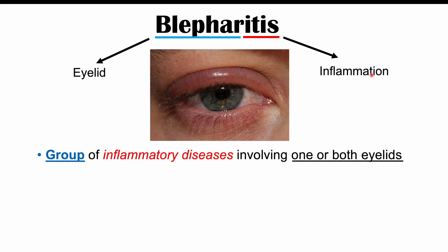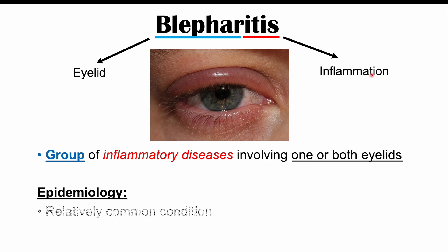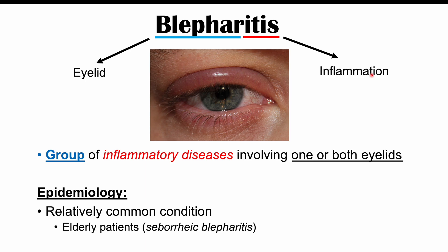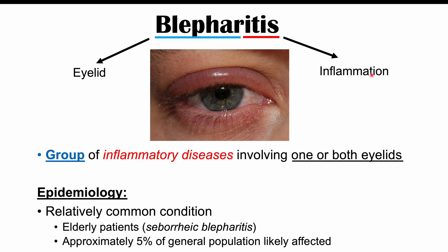We're going to talk about different types and causes of blepharitis in the upcoming slides. Blepharitis can be a relatively common condition, seen more commonly in older patients, especially the type known as seborrheic blepharitis. Epidemiological data suggests approximately 5% or more of the general population may be affected at any given time.